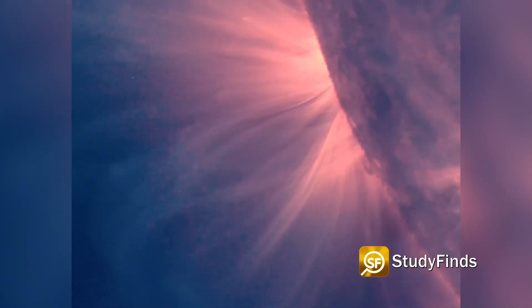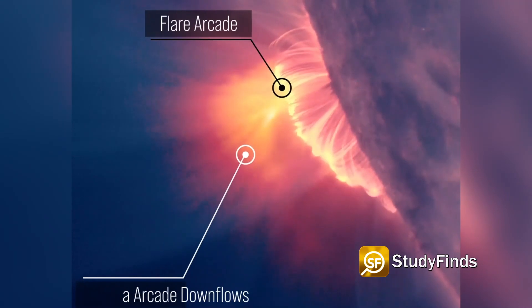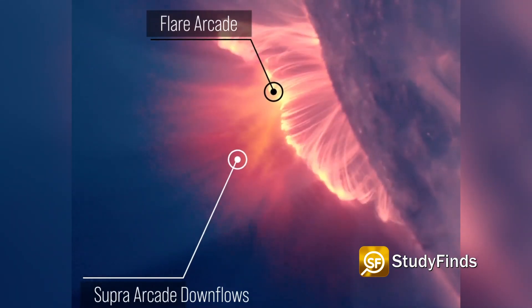Eventually, the magnetic fields are pushed together to the point where they reconfigure and release a lot of energy in the form of a solar flare, sort of like stretching a rubber band and cutting it in the middle.